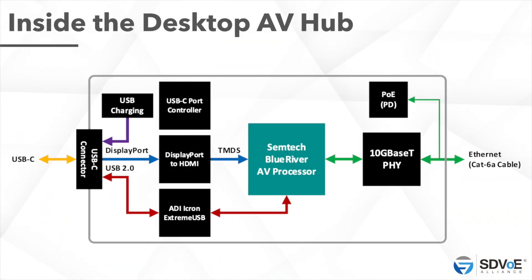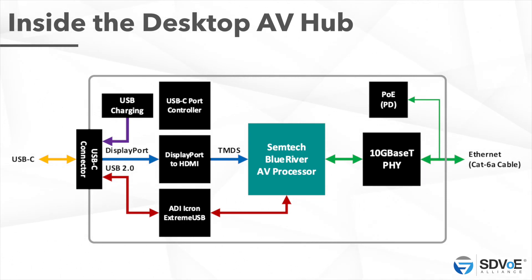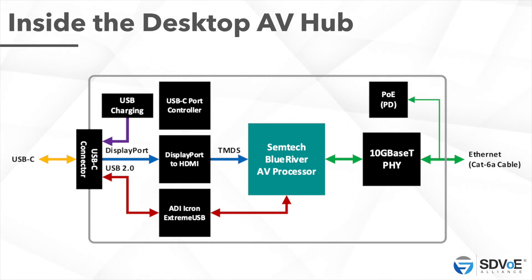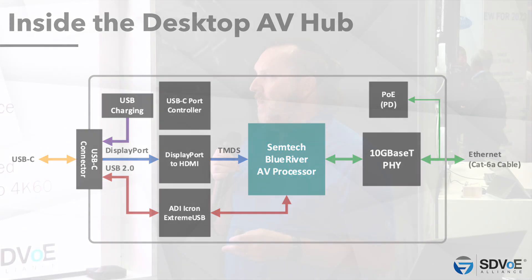We enable USB 2.0 extension through the ADI ICRON U Xtreme USB, a long-time partner and member of the SDVoE Alliance, used to get the remote camera feed back to your device. At the heart of the box is the Semtech Blue River AV processor, which concatenates all your signals — HDMI, USB, and any other control data — and sends that over standard 10 Gigabit Base-T connectivity using cat 6a cable. It can all be powered via PoE from the display AV hub, with optional USB charging.